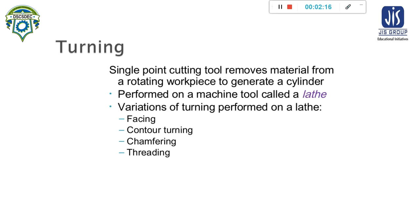So first, what is turning? It is a material removing process. Turning is a machining process in which a single point cutting tool removes the material from a rotating workpiece. For turning, the workpiece is rotating and we force the single point cutting tool towards it, and by doing so a cylindrical surface is generated. This process is known as turning, and the machine tool used for turning is known as the lathe.